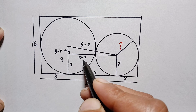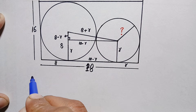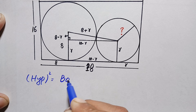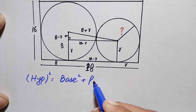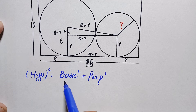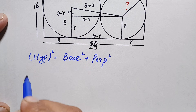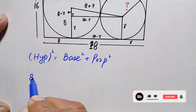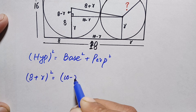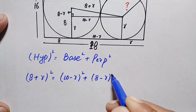Therefore this triangle is a right-angle triangle, and we can apply the Pythagorean theorem to find the value of r, the radius of the smaller circle. By the Pythagorean theorem, hypotenuse squared equals base squared plus perpendicular squared. Here our hypotenuse is 8 plus r, our base is 10 minus r, and our perpendicular is 8 minus r.